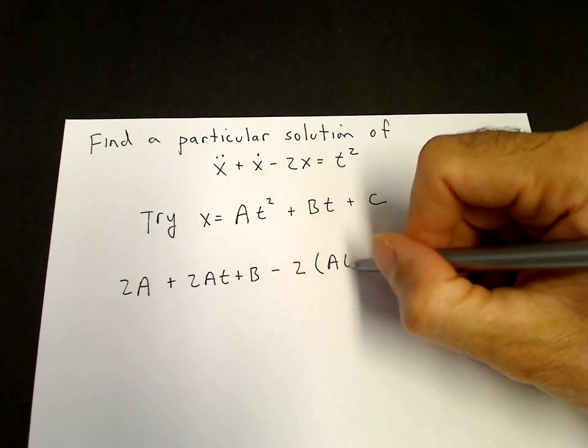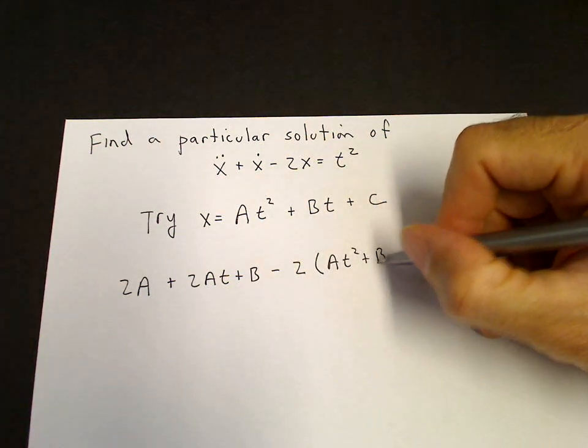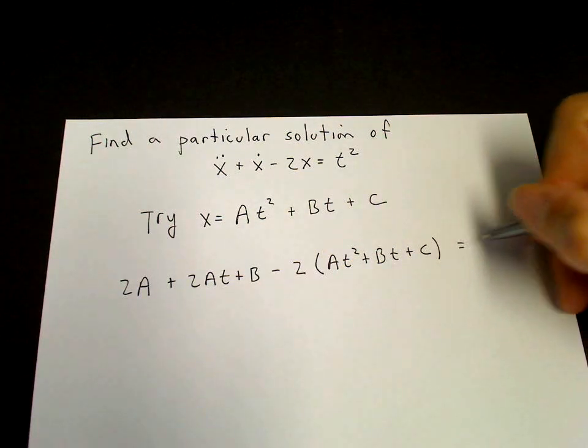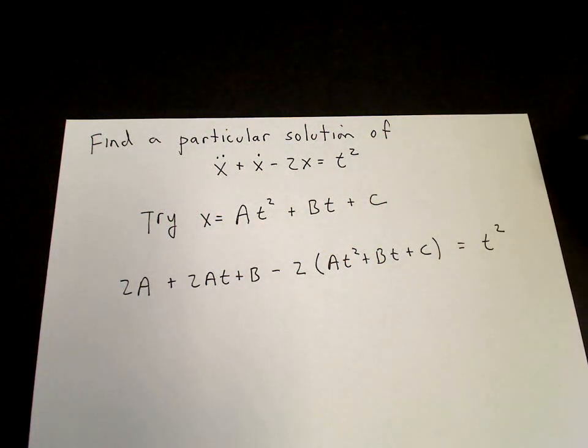And then the function itself, minus 2At squared plus Bt plus C equals t squared.